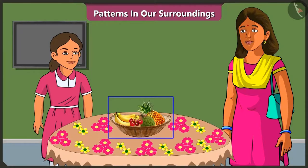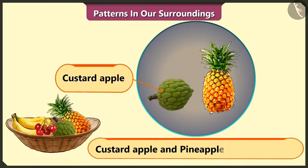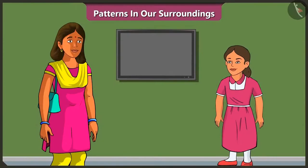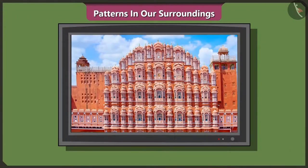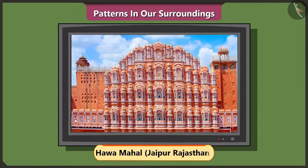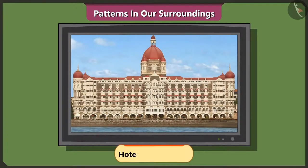Now, can you tell which of the fruits on the table have a pattern? There is a pattern in custard apple and pineapple. Vinny, please turn on the TV. Hey Mummy, is there a pattern on this building as well? Yes, this building is the Hawa Mahal at Jaipur in Rajasthan. And this is the Taj Hotel in Mumbai. Mummy, these patterns on these buildings make them look so beautiful, isn't it?